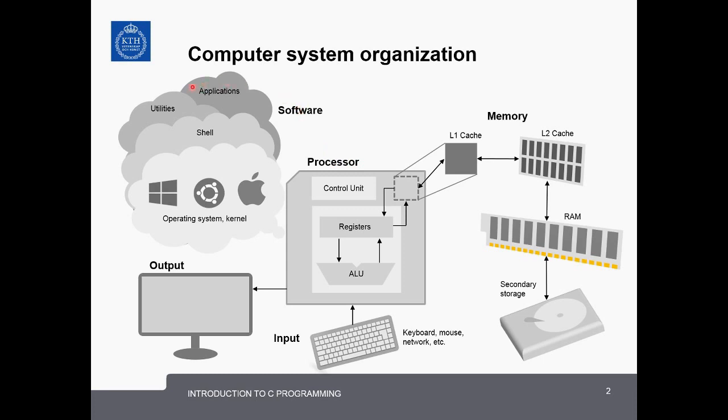Of course, everybody knows that software is what runs on a computer, but there are different types. At the very high level you have applications like your email client or web browser, and lower level you have utilities like a printer driver, and below that the shell. A shell is a user interface for access to an operating system's services using either command line or graphical interface. Finally, at the lowest level you have the operating system, such as Windows, Linux, or OSX.